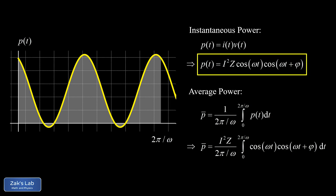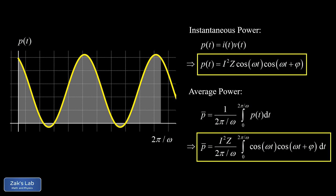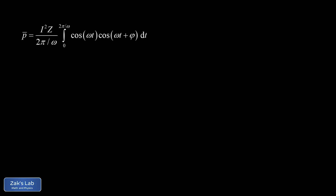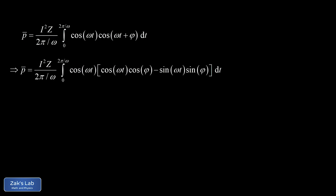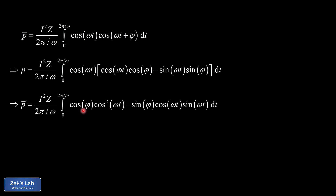Pulling I²Z out in front, we need to integrate a product of two cosines with the same frequency but different phase shifts. We apply the cosine sum identity: cos(x + y) = cos x·cos y − sin x·sin y, expanding cos(ωt + φ). This splits the integral into one term with two cosines and one term with two sines.